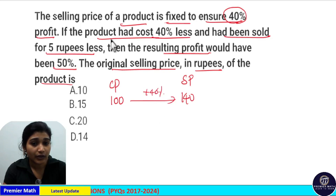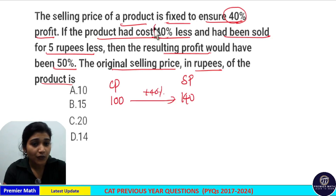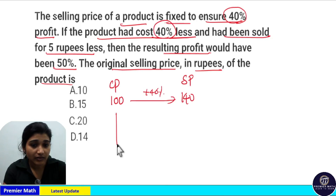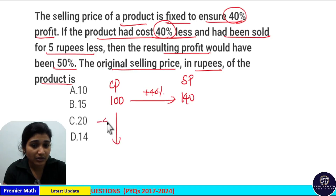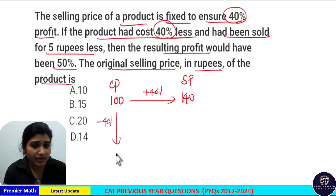Now if the product had cost 40% less, that means 100 minus 40 equals 60 rupees as the new cost price.